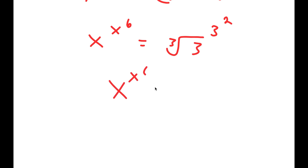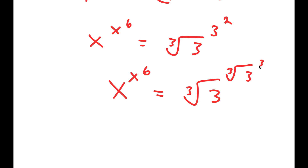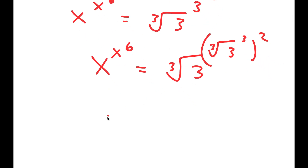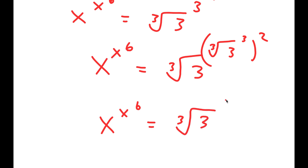From here, I get x to the power of x to the power of 6 is equal to the cube root of 3 to the power of the cube root of 3 to the power of 3 to the power of 2, and this is equal to the cube root of 3 to the power of the cube root of 3 to the power of 6.